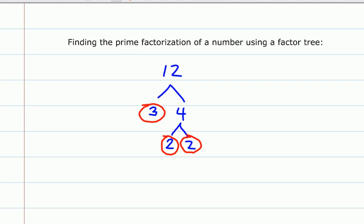So I know that this is the longest factor string that I could get that consists of prime numbers. So this is my prime factorization. The prime factorization of 12 is 3 times 2 times 2. Thank you.